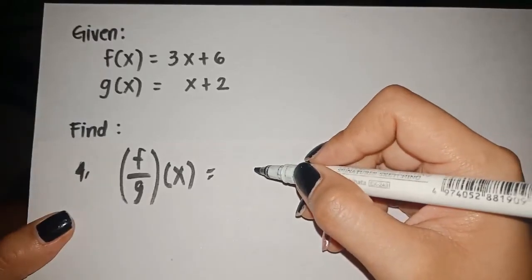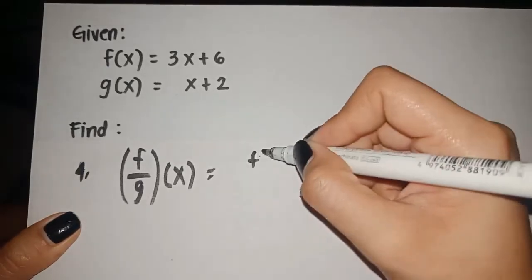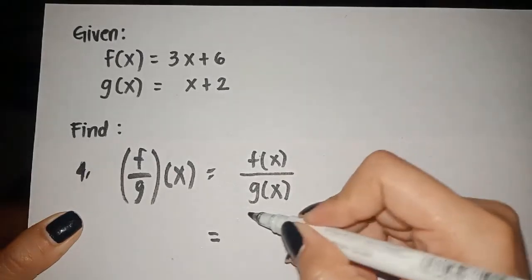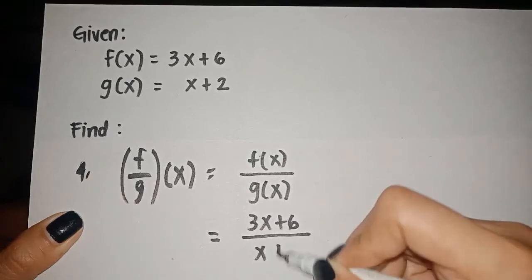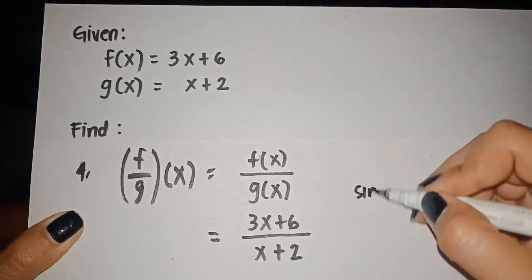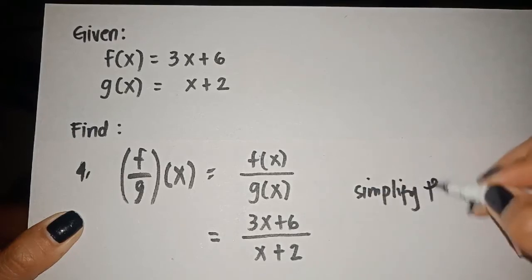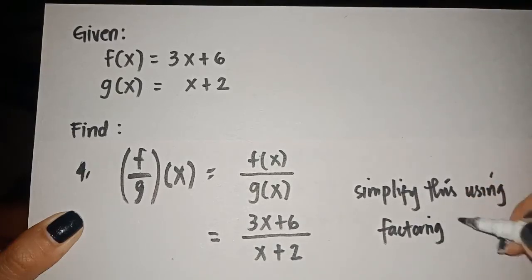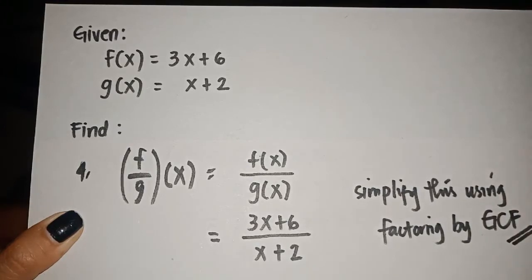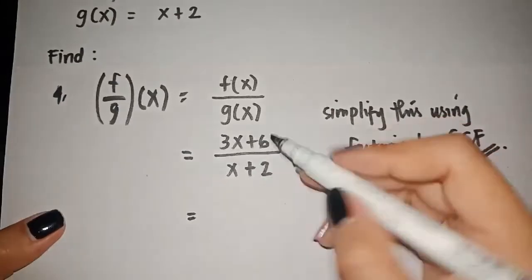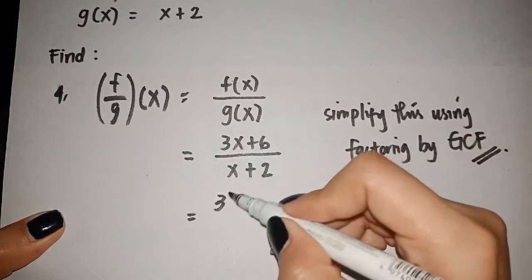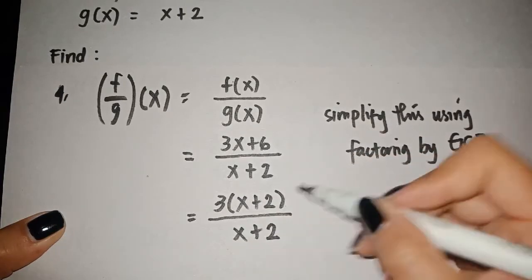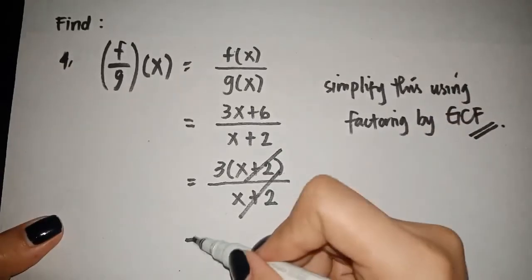For division, we have f(x)/g(x) = (3x + 6)/(x + 2). The first thing to do is cancel out common terms by simplifying through factoring. Since the numerator is a binomial, we use factoring by GCF. The common factor is 3, giving us 3(x + 2)/(x + 2). We can cancel the common terms, and we are left with positive 3 as the final answer.